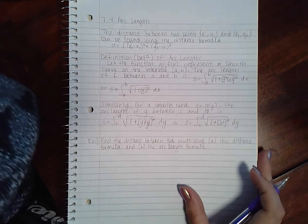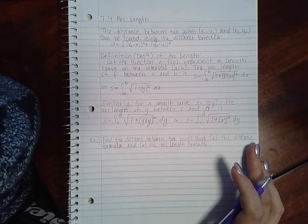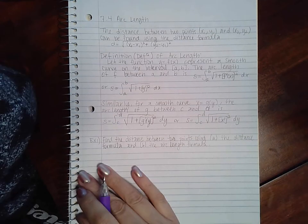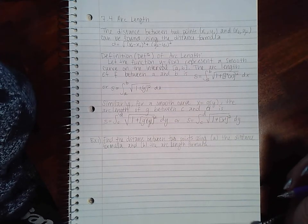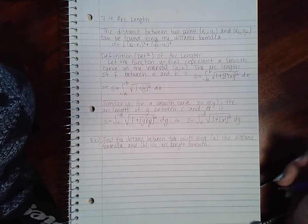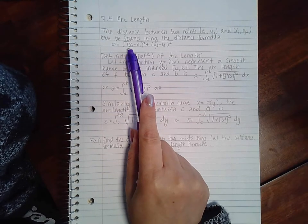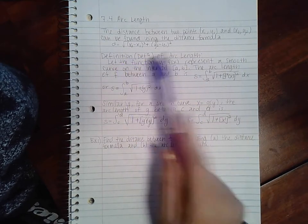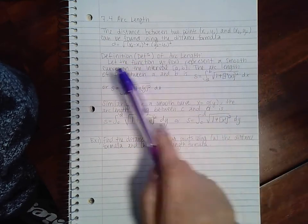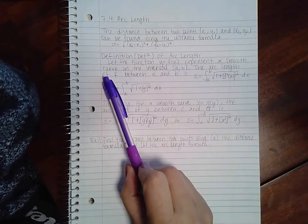This is section 7.4, arc length. The beginning says the distance between two points (x1, y1) and (x2, y2) can be found using the distance formula given here, which you probably have seen in algebra or precalculus. The definition of arc length, however, is for a function f(x) that represents a smooth curve.